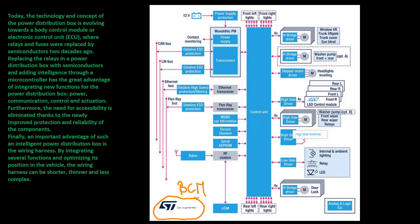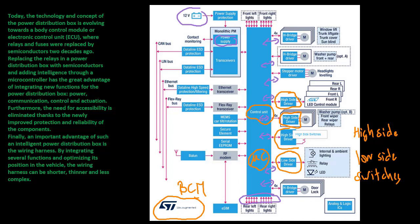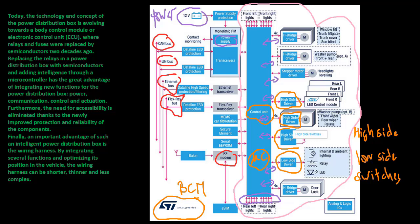Today the technology and concept of the power distribution box is evolving towards a body control module or electronic control unit, where relays and fuses were replaced by semiconductors two decades ago. Replacing the relays in a power distribution box with semiconductors and adding intelligence through a microcontroller has the great advantage of integrating new functions for the power distribution box like power, communication, control, and actuation.